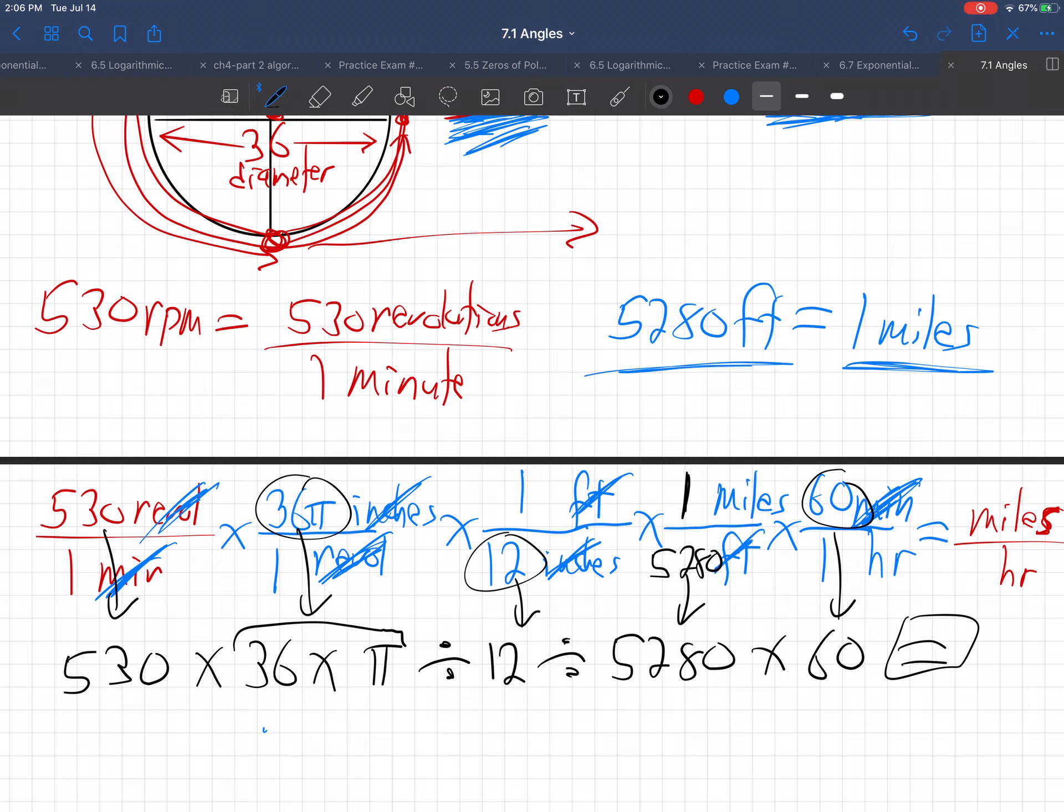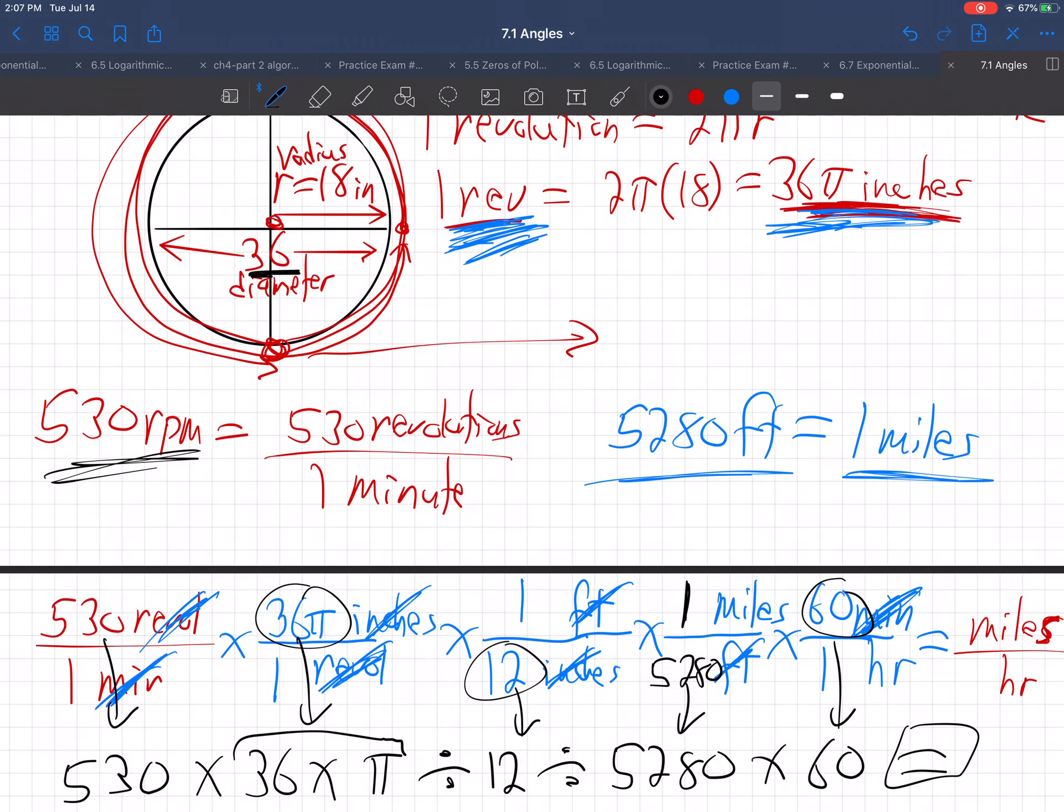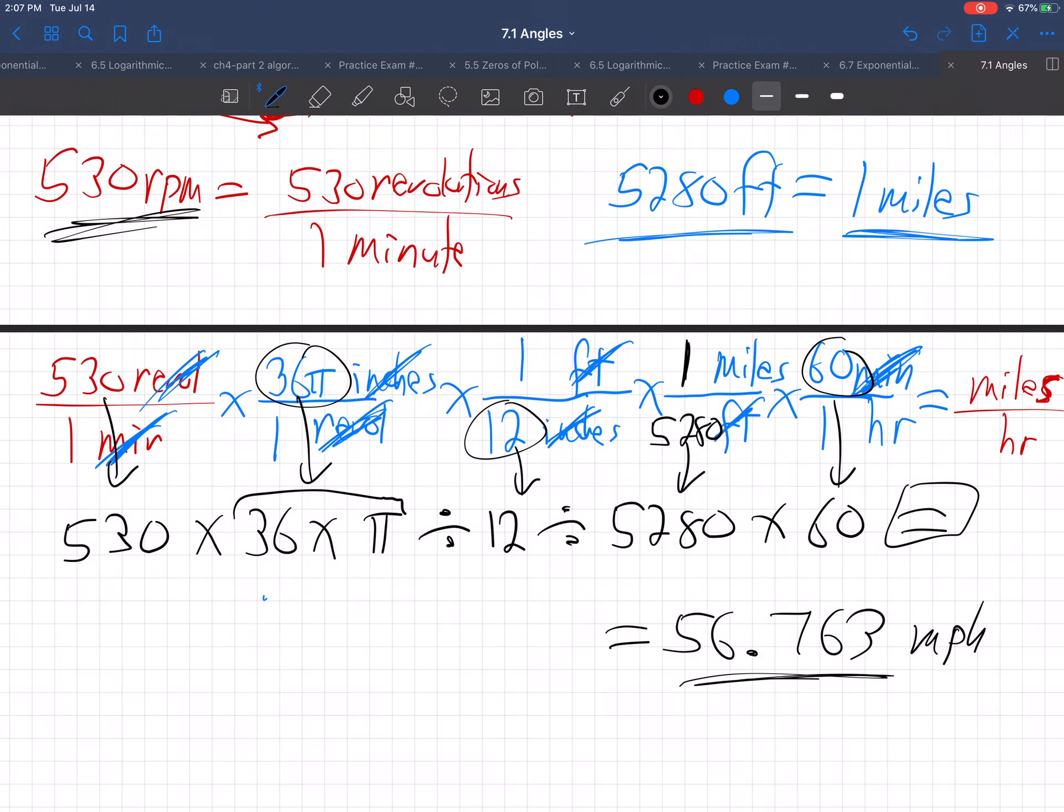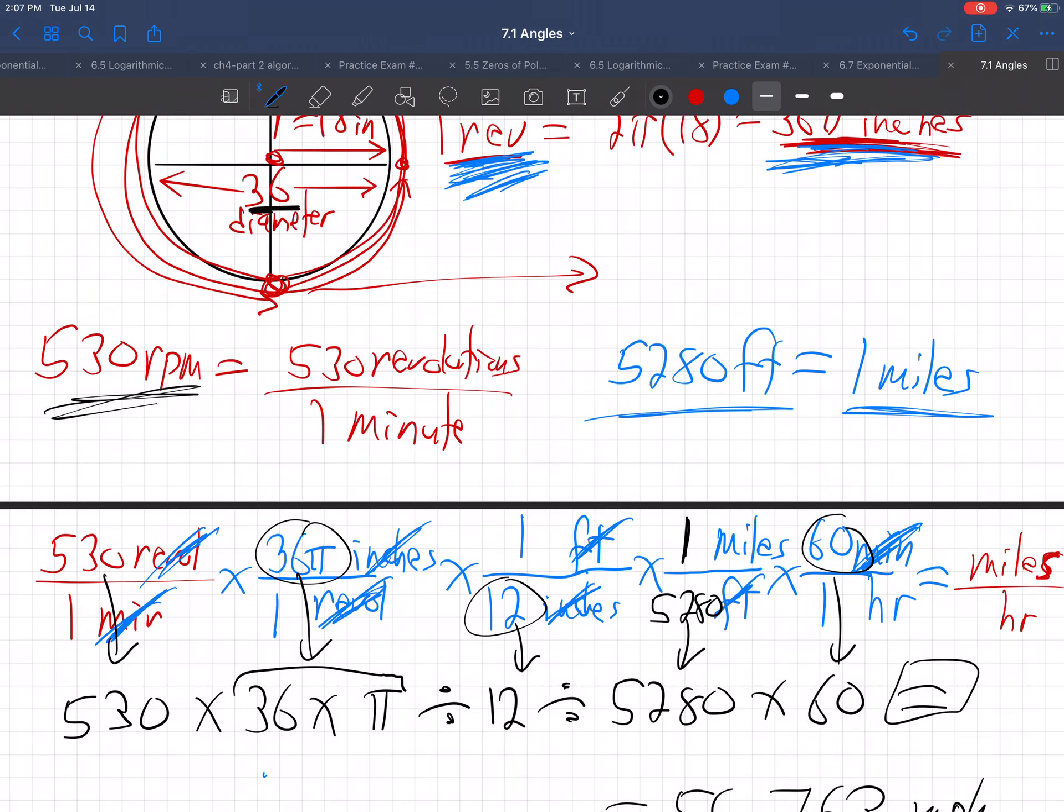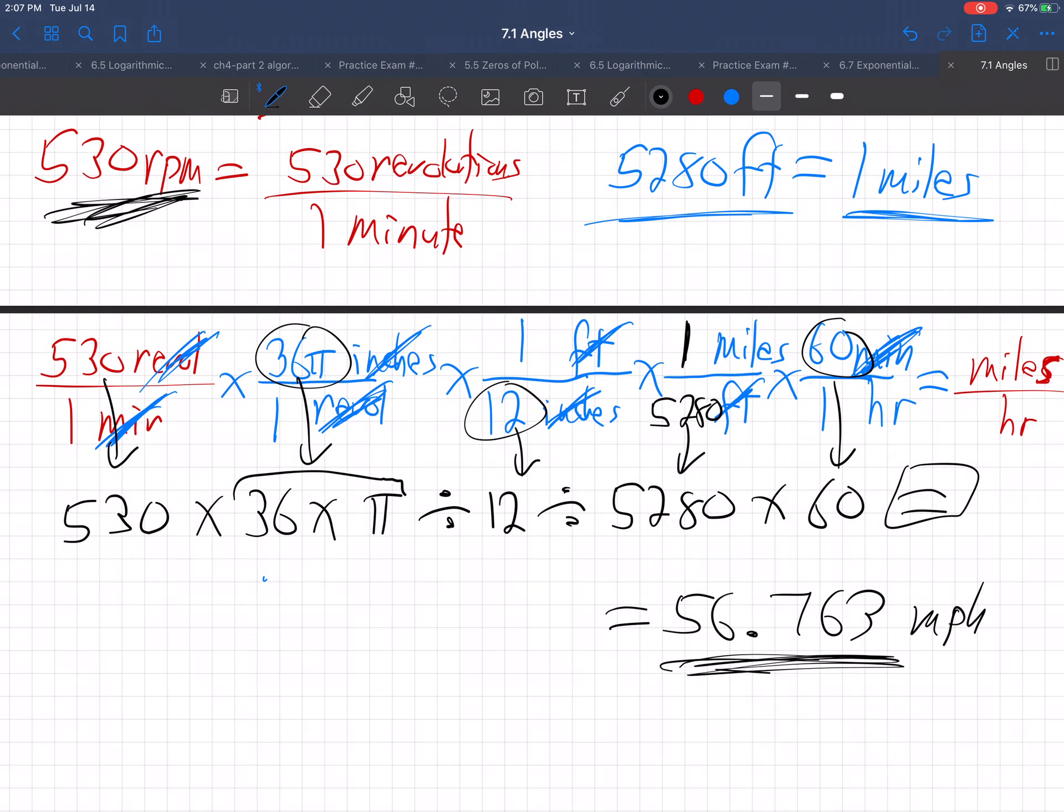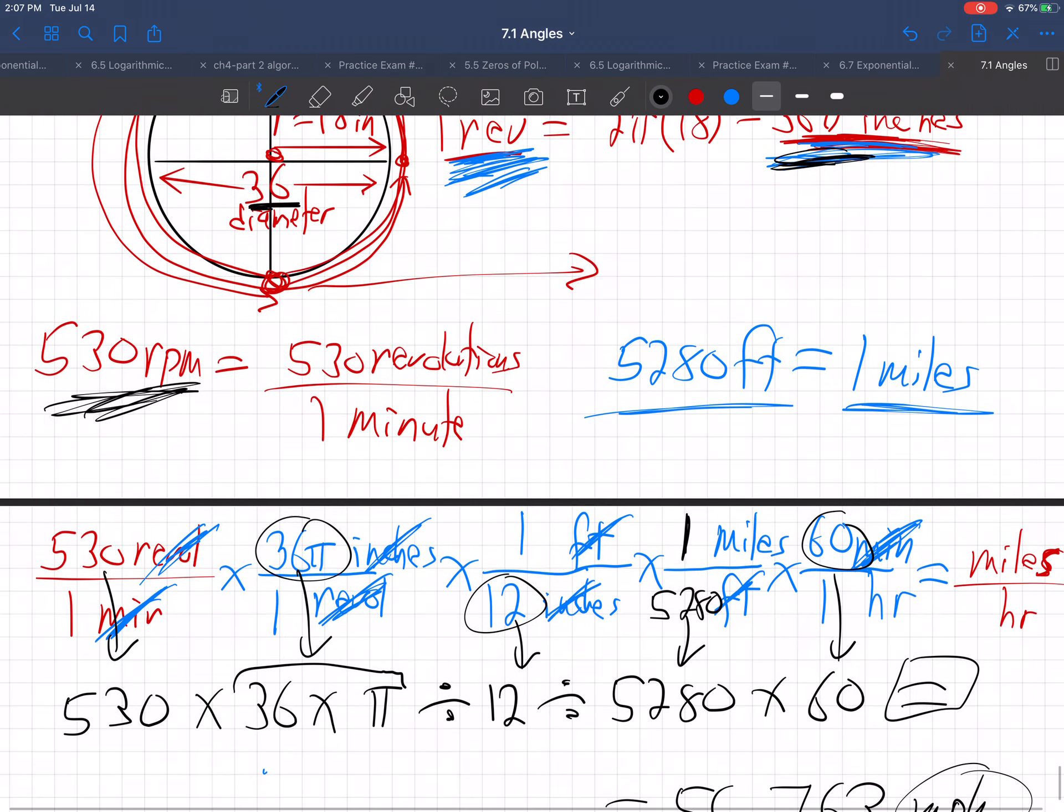That's what makes unit conversion so easy. We never worried about multiply, divide, anything like that. We just made the units in the right spot, canceling whatever we needed to cancel. And then the numbers will end up in the right spot. I'm getting 56.763 miles per hour. So if that truck is going 530 revolutions per minute, and his tires have a 36-inch diameter, he's traveling down the road at 56.763 miles per hour. There we go, unit conversion.